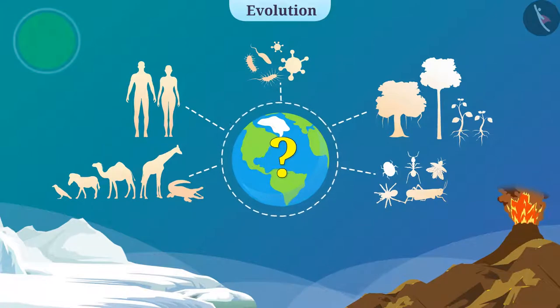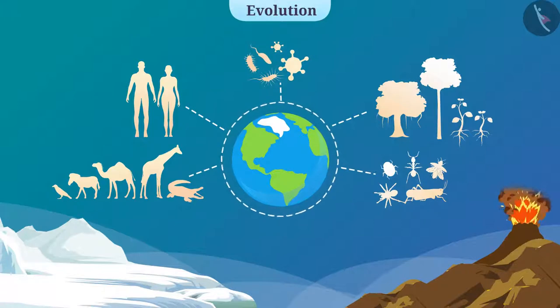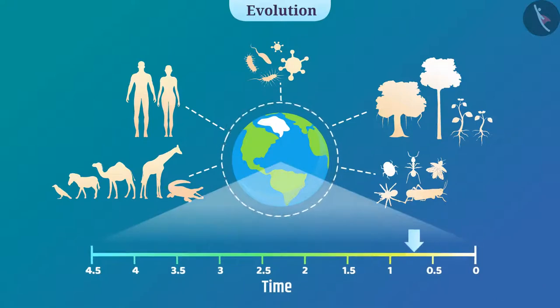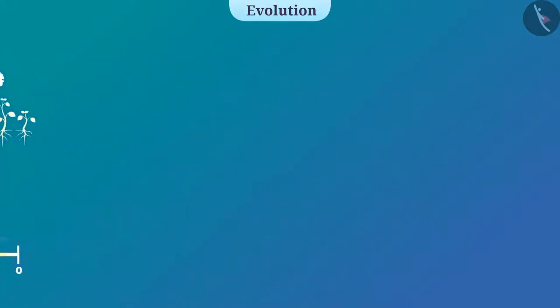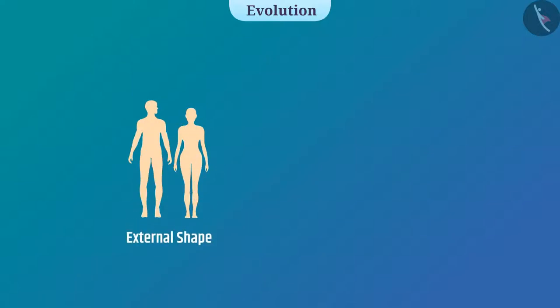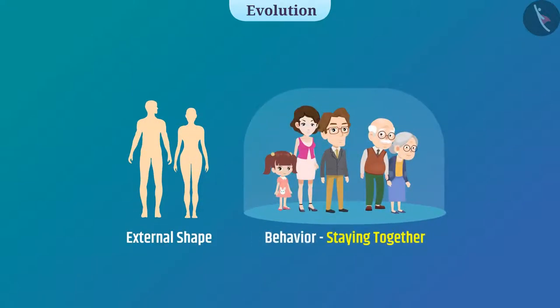We get the answer from the study of evolution. To find out how the organisms have evolved, we need to know how different species originated in time. To understand this, we consider the external shape and behavior of organisms as the basis.